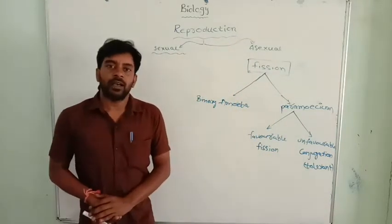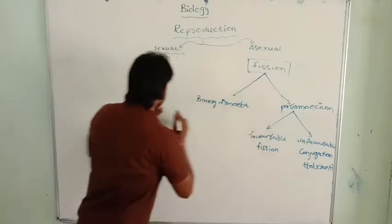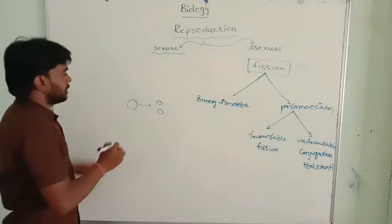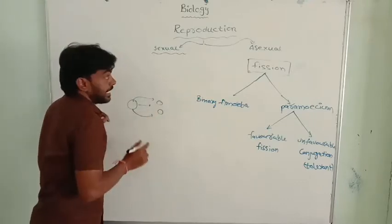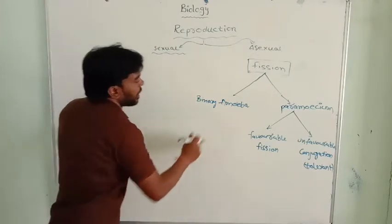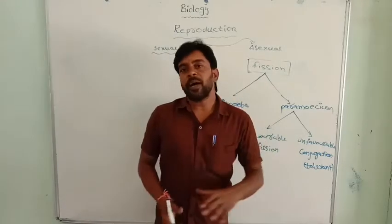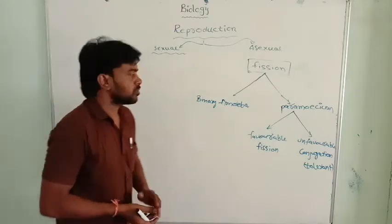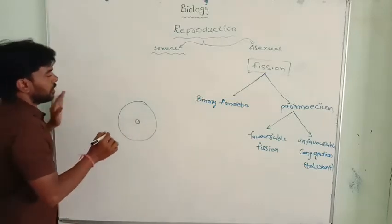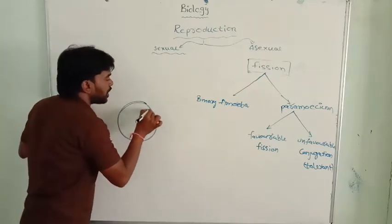Binary fission and multiple fission. As you know, the body is divided into two equal parts by asexual reproduction is called binary fission. You know very well amoeba is a unicellular organism. Amoeba by the binary fission reproduces. Amoeba is a unicellular organism.